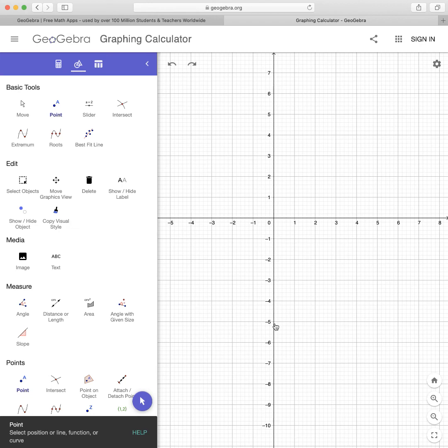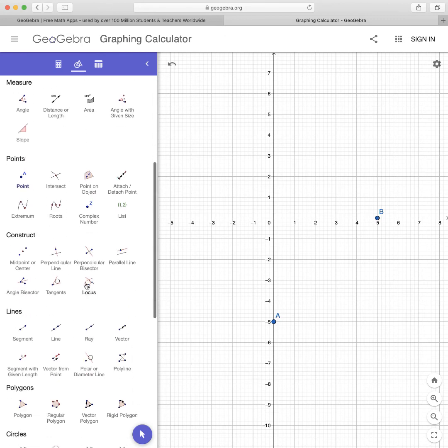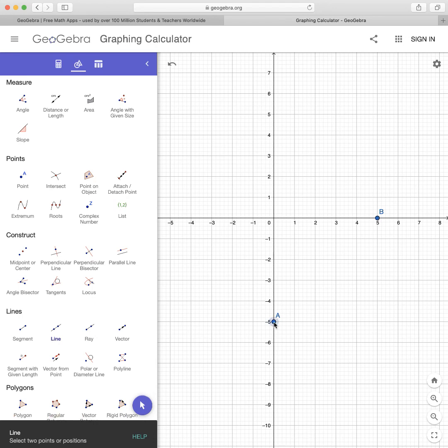So at x equals 0, for example, the function is equal to negative 5. And at x equals 5, the function is equal to 0. So between these two points, we can scroll down and choose a line, and we can draw a line between these two points.